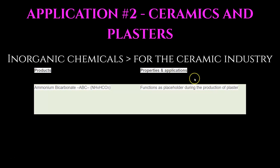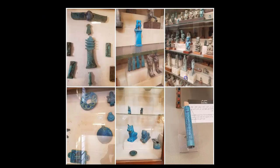Next up, application number two: manufacturing ceramics and plasters, which was clearly a huge industry in ancient Egypt. You can see here some of the beautiful blue faience ceramics from the Egyptian Museum. These are some of my favorite pieces — the blue is just unbelievably captivating. Amazing treasures from the ancient world, all wrapped up in ancient chemistry.